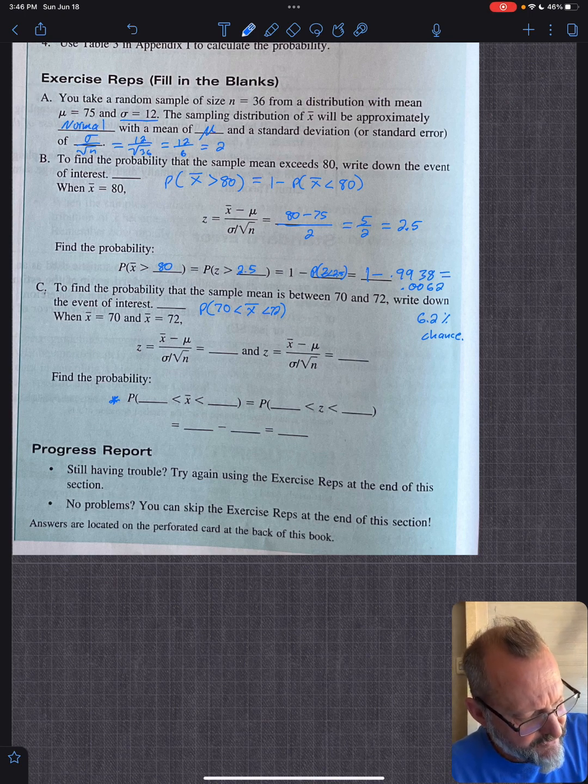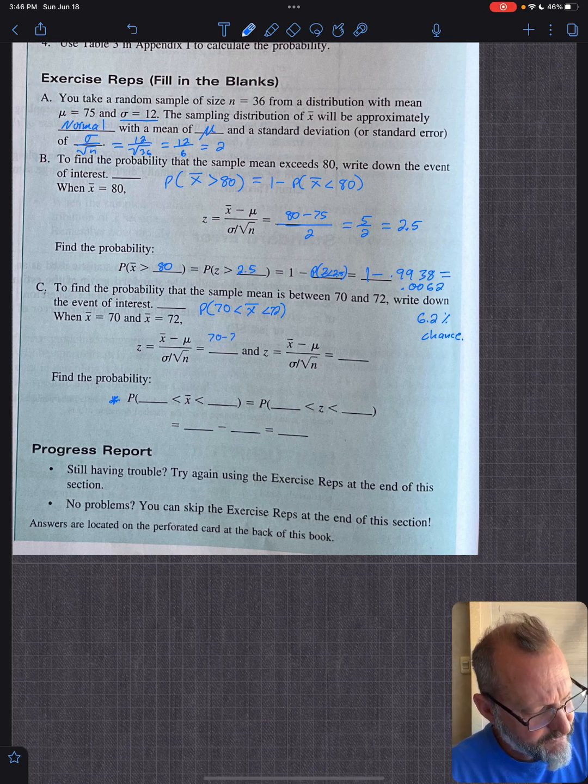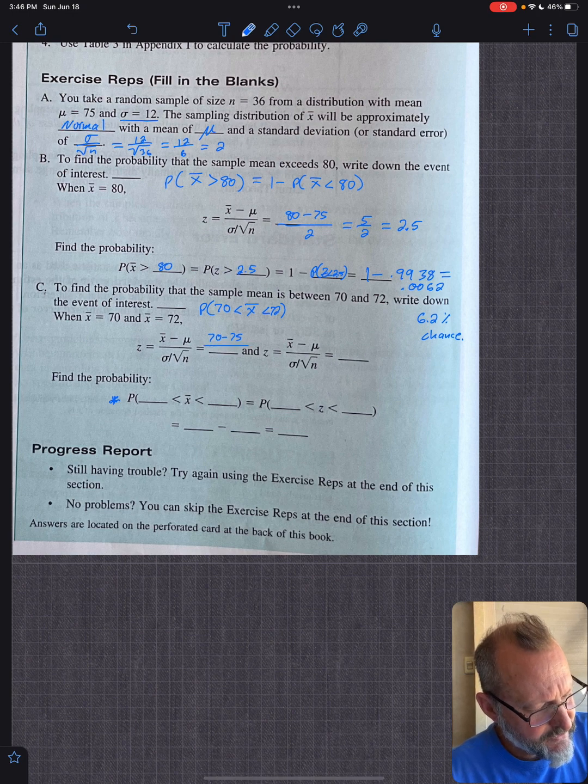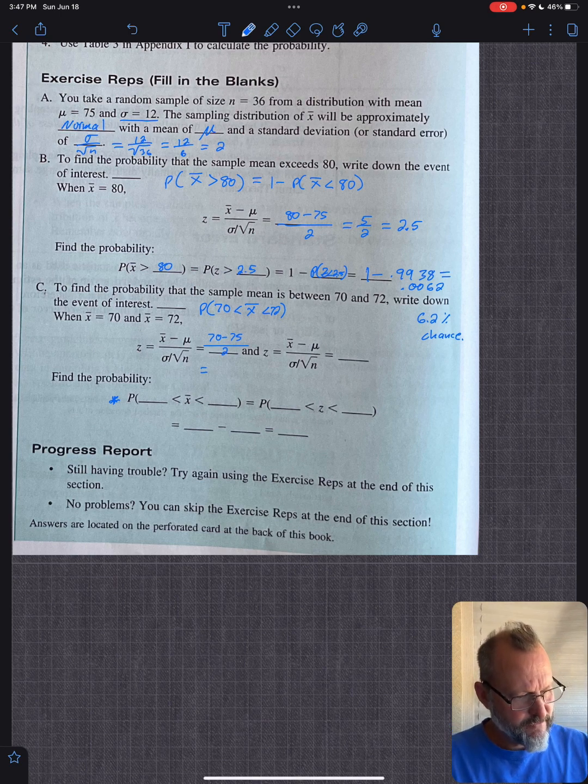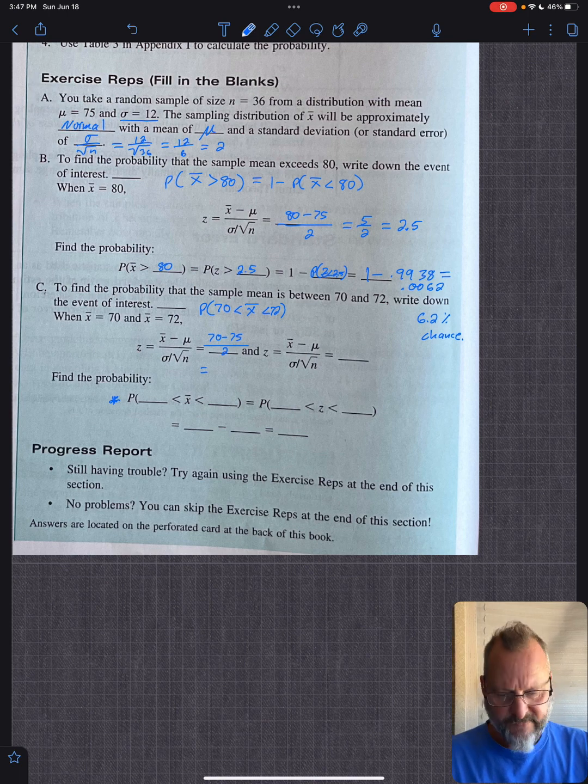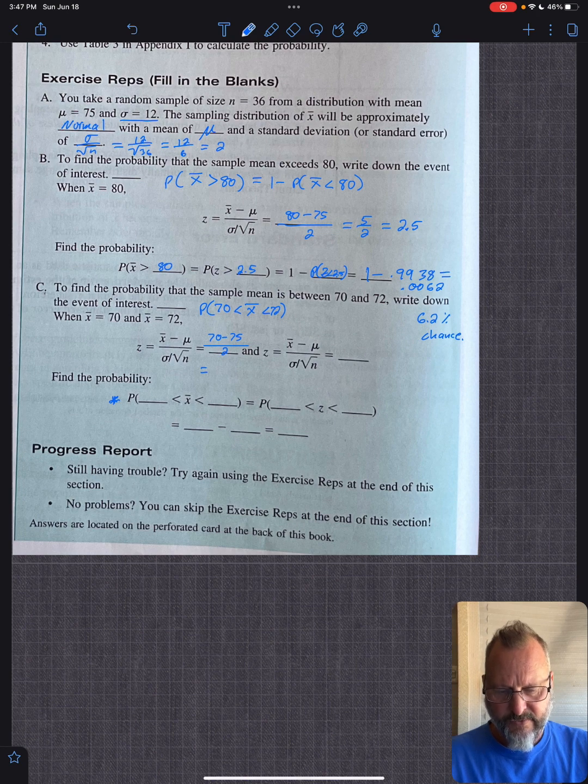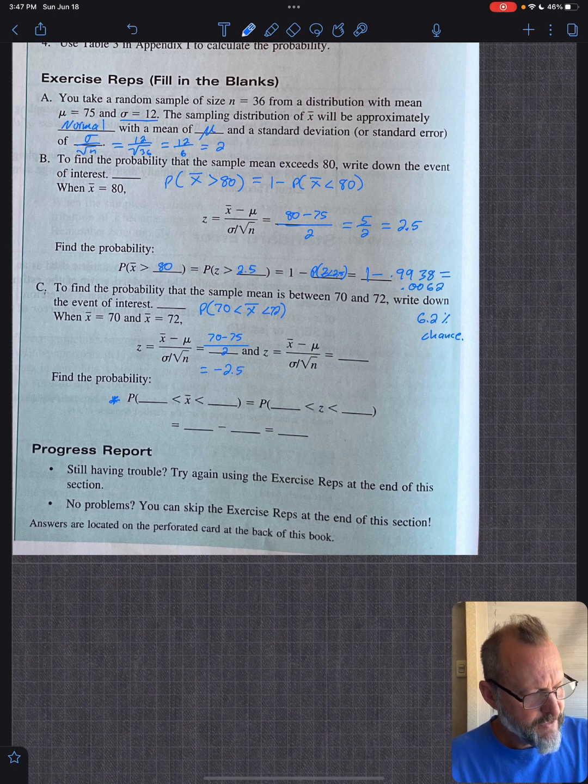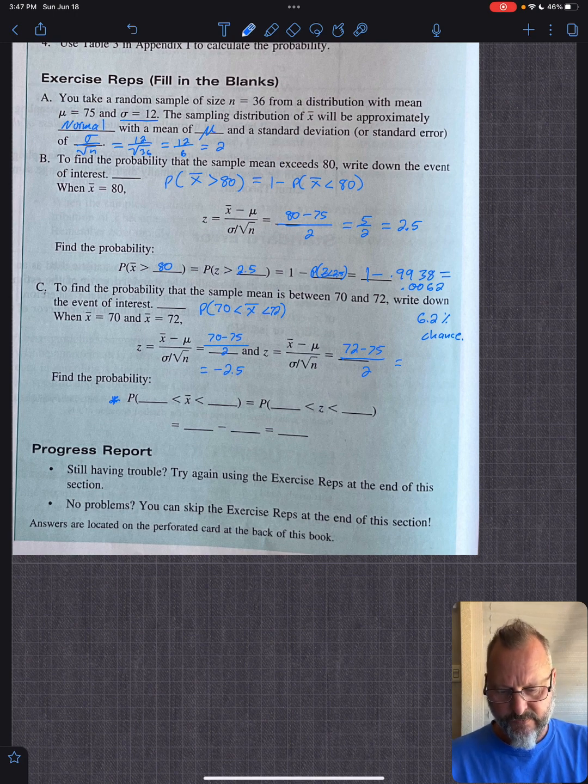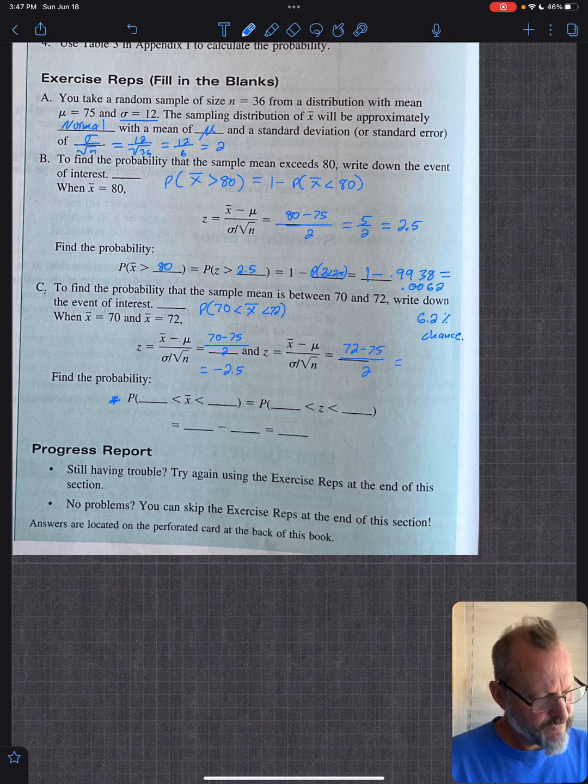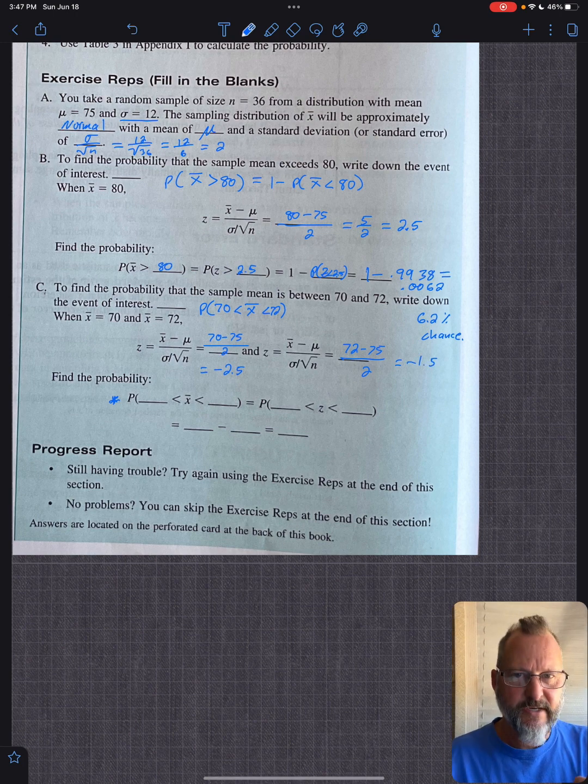So x-bar is 70 minus 75 over 2. We've already done that. Same one. So that's just 2. And then the other, let's just calculate that. So that'll be negative 2.5. So that'll be 70 and then 75 and then divide by 2. So that's negative 2.5. And then this one will be your 72 minus 75 over 2. So 72, 75 subtract, and then divide by 2. That's negative 1.5.